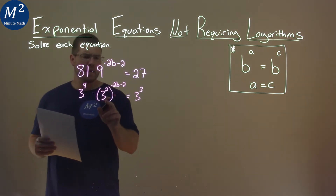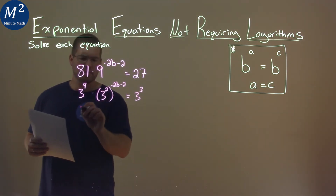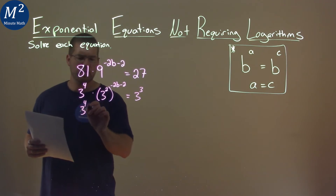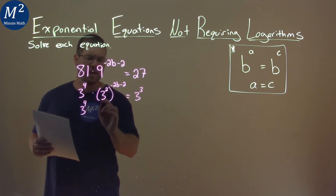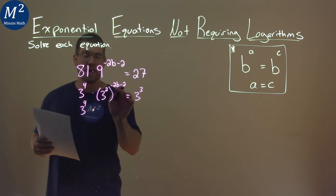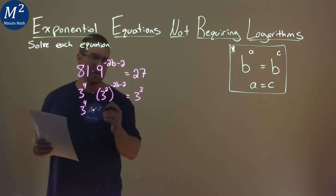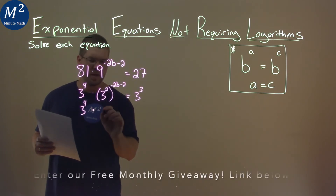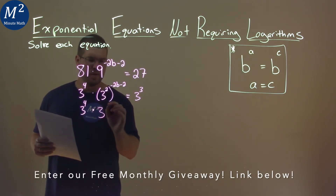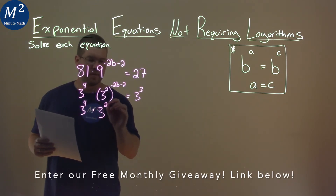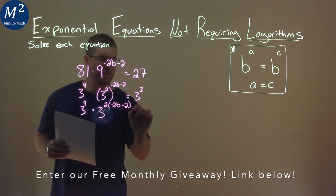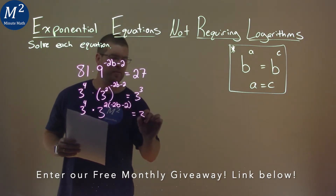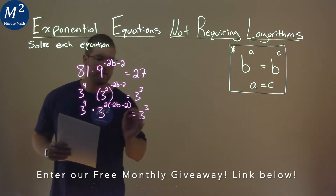Now, simplifying here, the 3 to the 4th power stays there, but our rules state when we raise something that's an exponent to another exponent, we multiply the exponents. So this is 3 to the 2 power times negative 2b minus 2, and that equals 3 to the 3rd power.